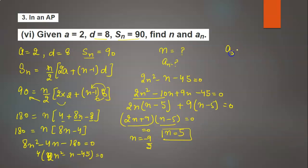Now we need to find the value of an. n is 5. The formula for the nth term is a plus (n minus 1) times d. Here a is 2 plus (5 minus 1) times 8.